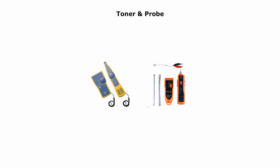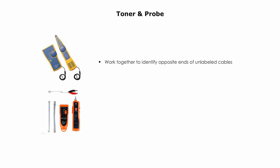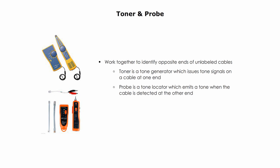Toner and probe work together to identify the opposite ends of unlabeled cables. Toner is a tone generator which issues tone signals on a cable at one end. Probe is a tone locator which emits a tone when the cable is detected at the other end. They are useful to label cables or identify a specific cable for troubleshooting in a telecommunication room.